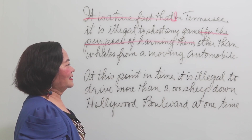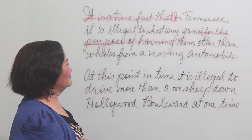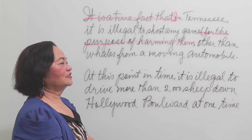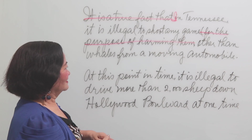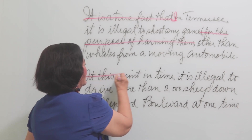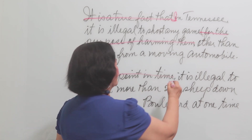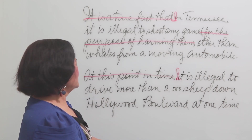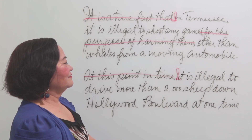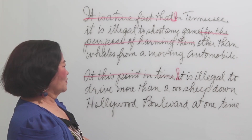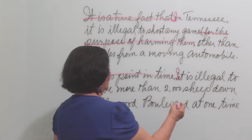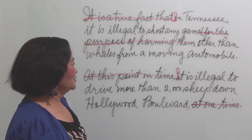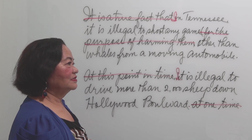Next: 'At this point in time, it is illegal to drive more than 2,000 sheep down Hollywood Boulevard at one time.' Cross out 'at this point in time' and replace with 'now,' or simply remove it. Revised: 'It is illegal to drive more than 2,000 sheep down Hollywood Boulevard at one time.'